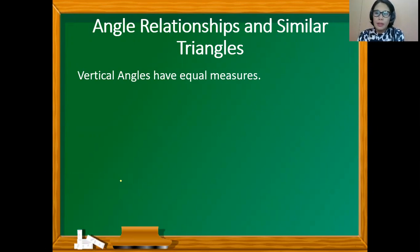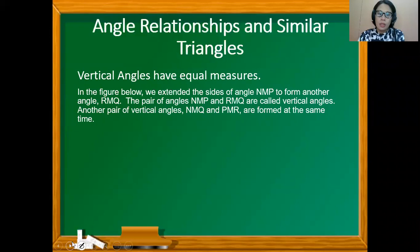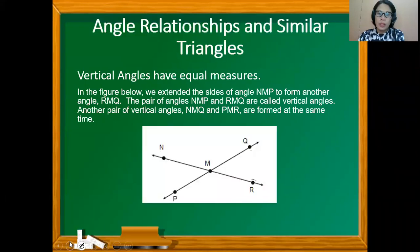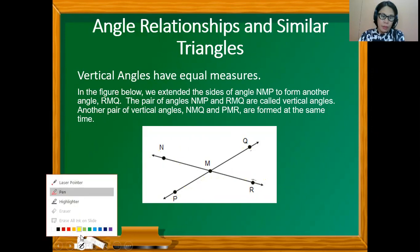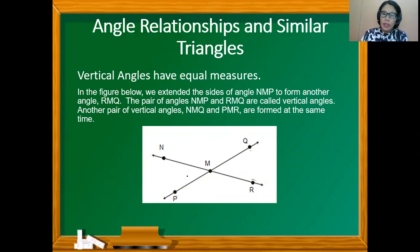Let us recall that vertical angles have equal measures. In the figure, we extended the sides of angle NMP to form another angle RMQ. The pair of angles NMP and RMQ are called vertical angles, also known as opposite angles. The two angles are congruent.